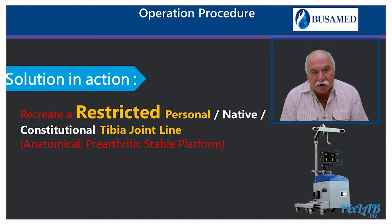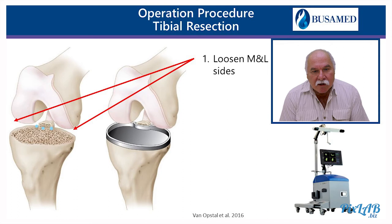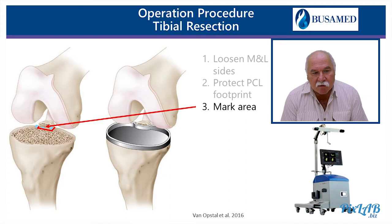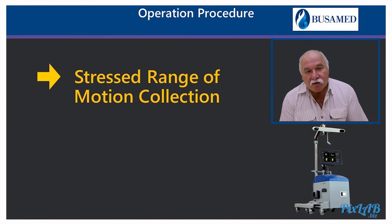This is the method to protect your posterior cruciate ligament — the island technique. Loosen the medial and lateral sides of the knee. Protect your PCL footprint with either a K-wire, mark the area with an osteotome, place the cutting guide in, and perform tibial resection.